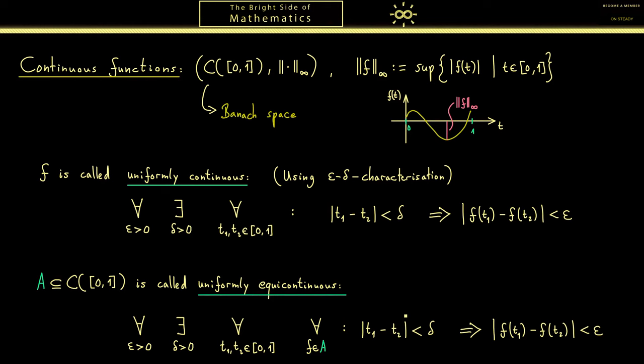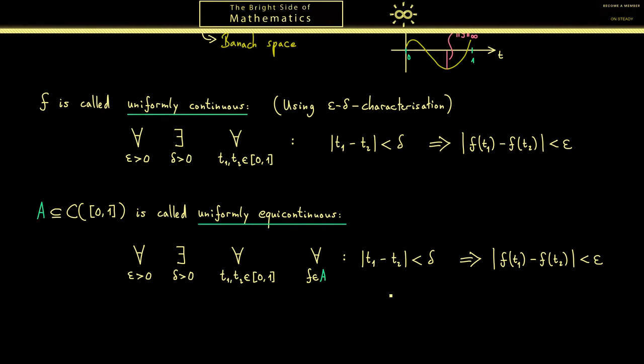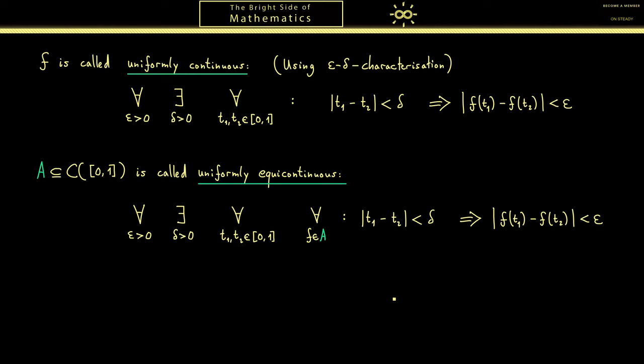Now after understanding where the long formula with the quantifiers comes from we can simplify this into a shorter formula. Going through all the f here is of course equivalent to saying that the supremum over f of this number is less than epsilon. And the epsilon delta gadget we used before can be translated into a limit process. This means the supremum has to go to 0 if the distance between t1 and t2 goes to 0.